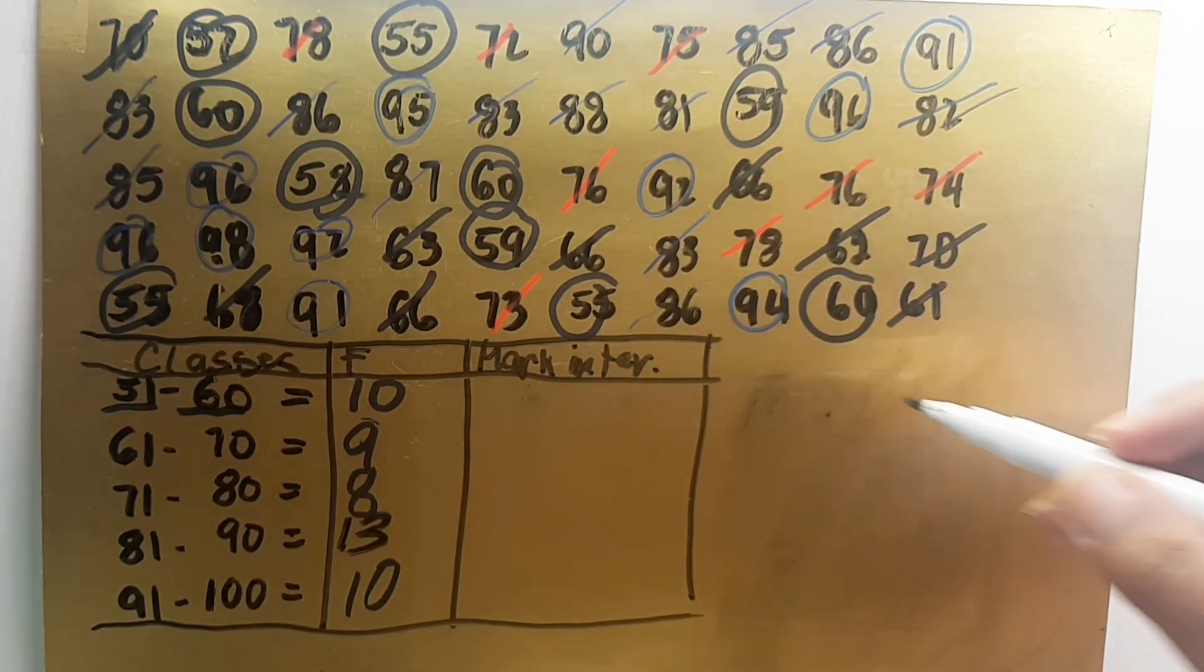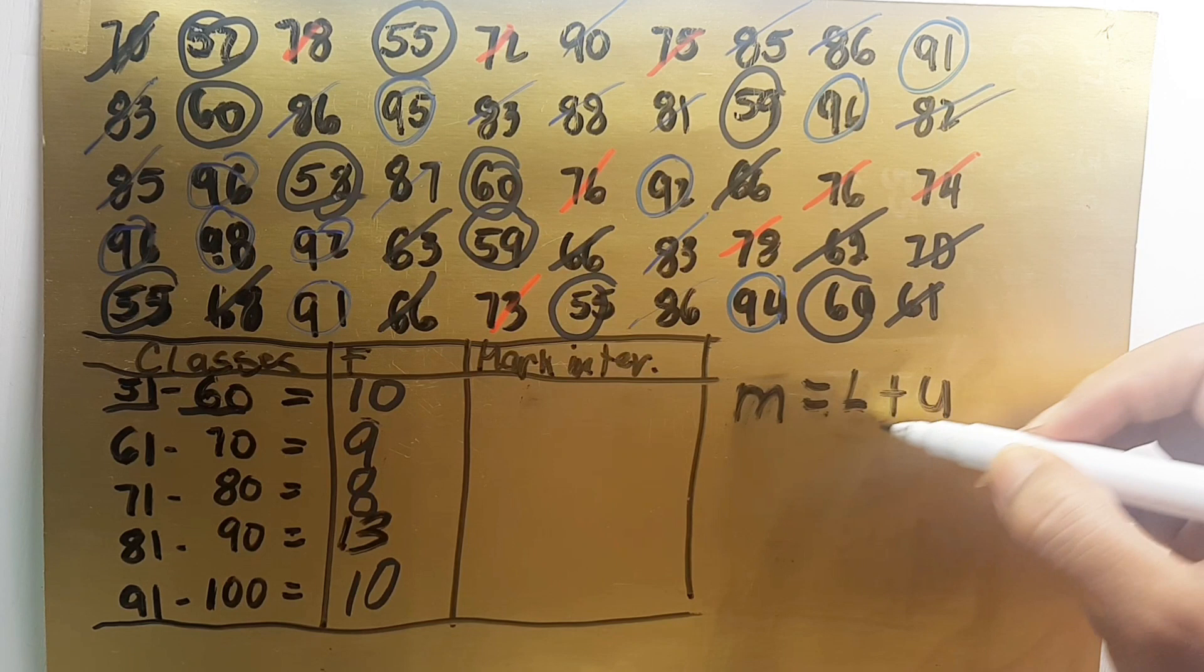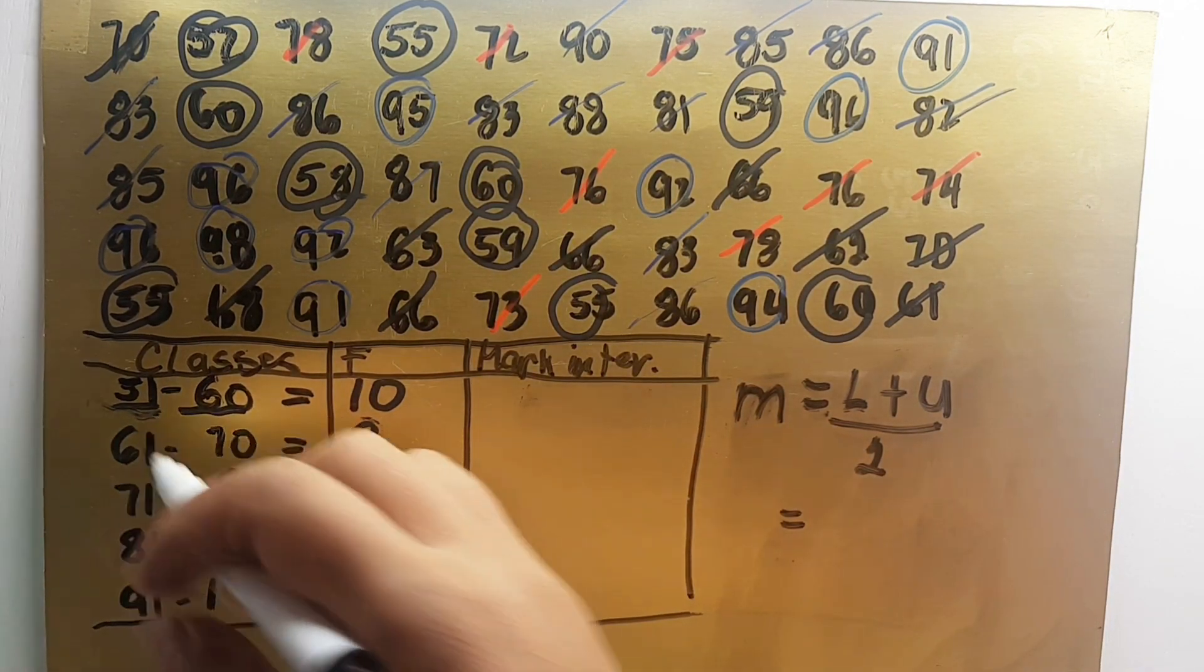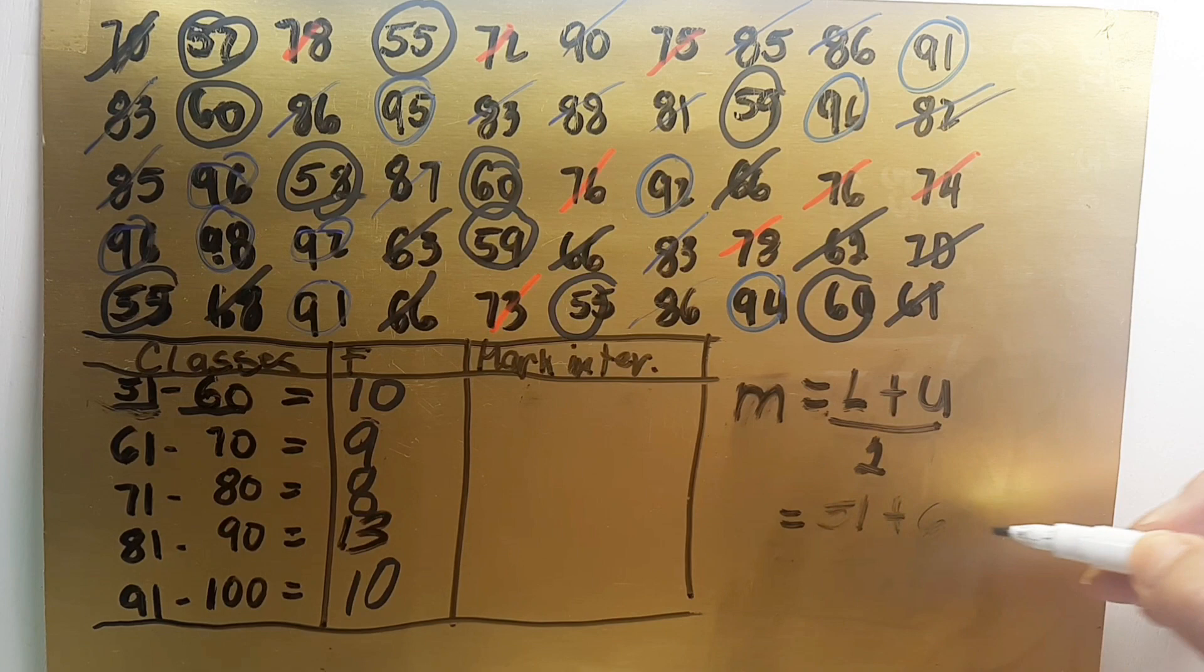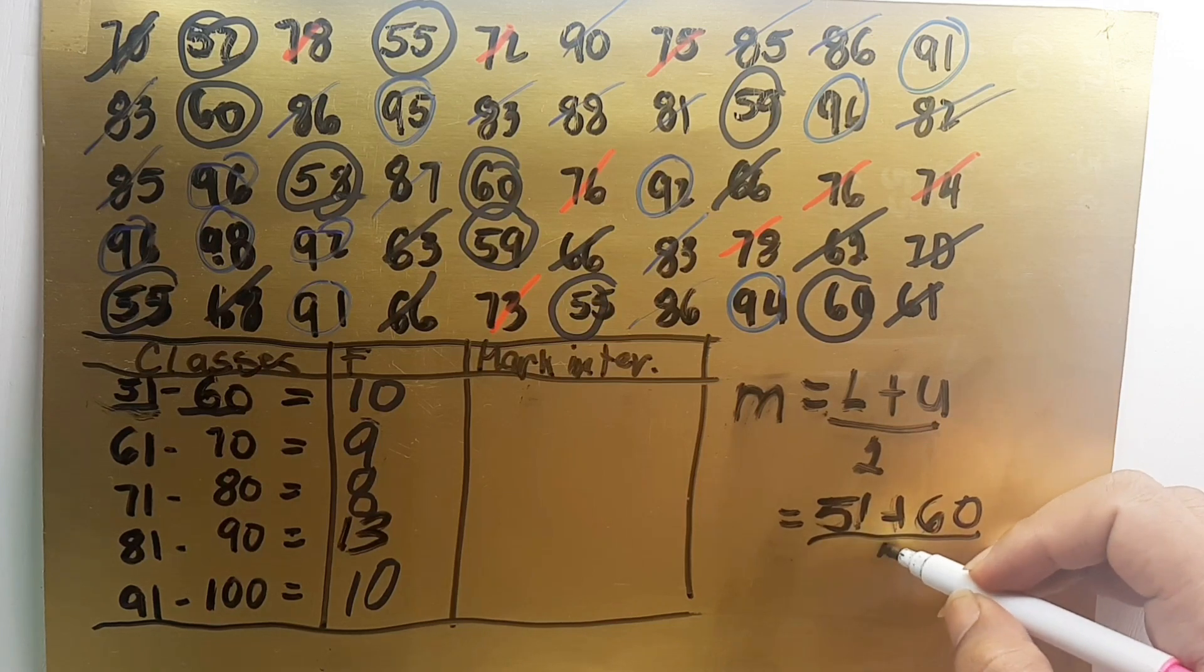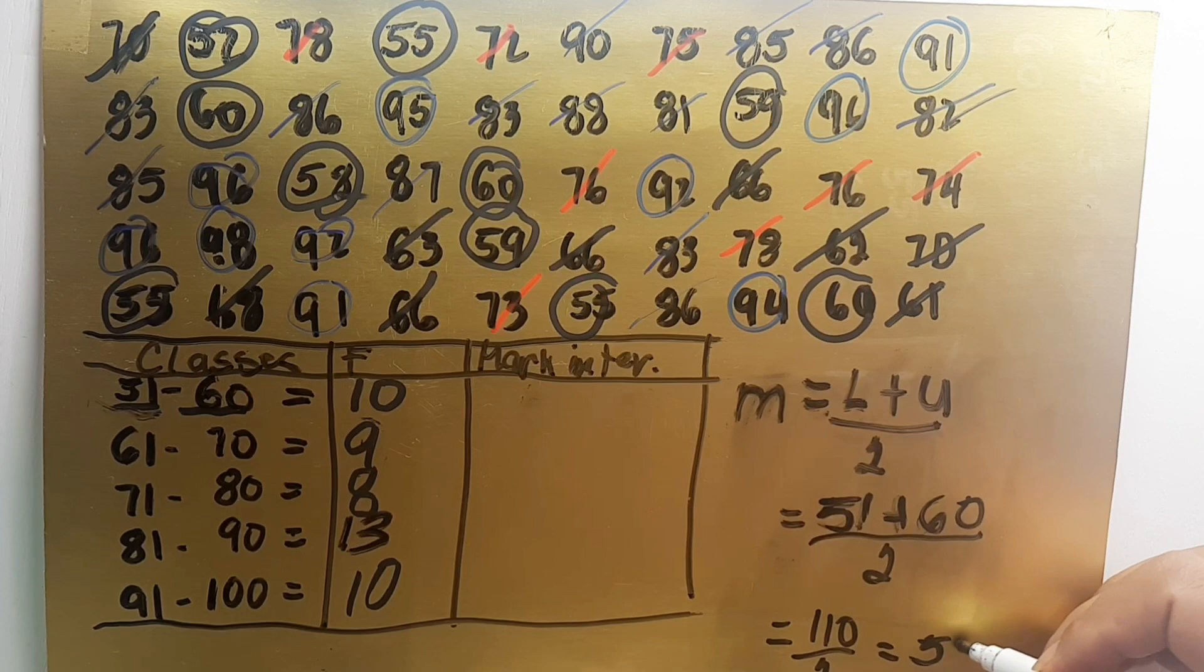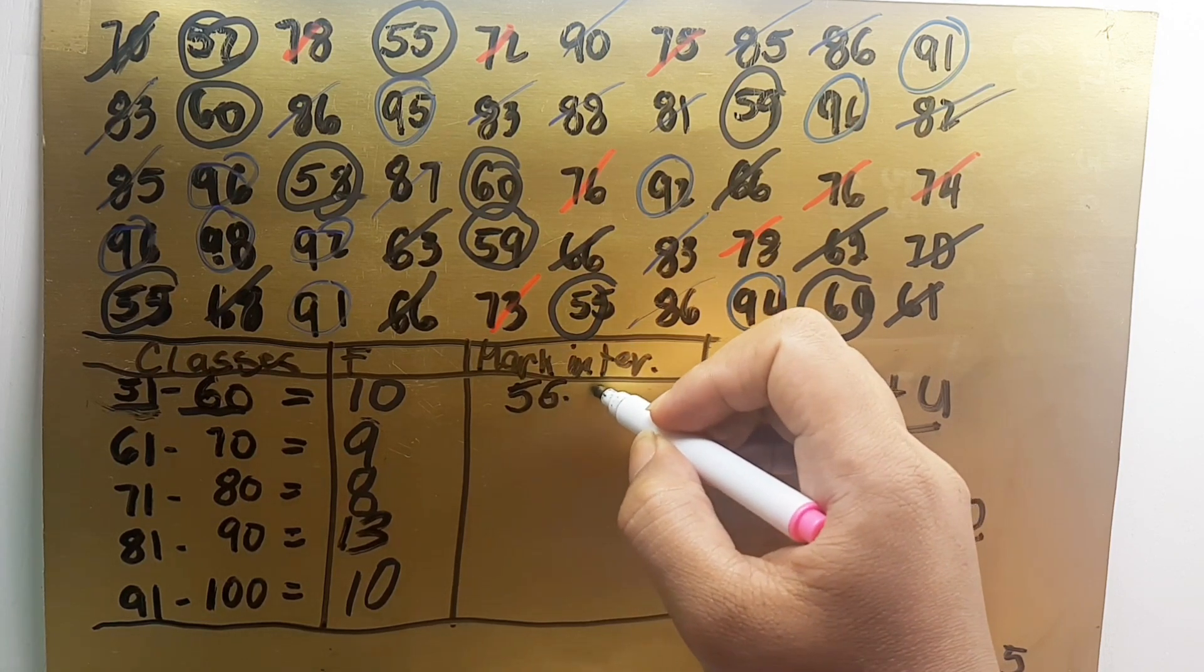This is how to get the mid intervals of each class. The formula is midpoint M equals lower limit plus upper limit divided by 2. So let's substitute the lower limit of each class. The lower limit, it means 51, that is our lower limit, plus 60, this is the upper limit, divided by 2. So equals 51 plus 60 is 111 divided by 2 equals 55.5. So let's put it here, 55.5.